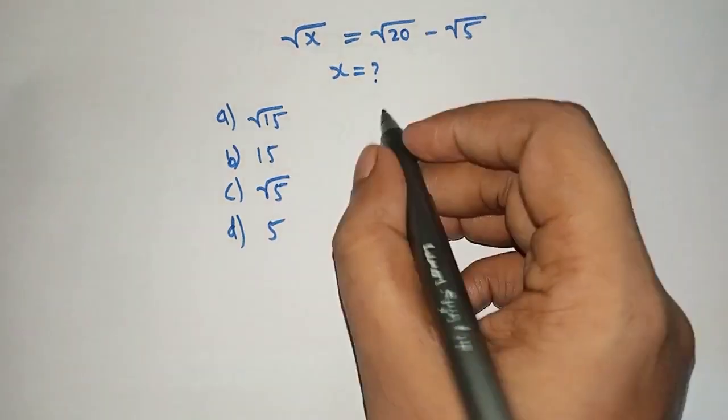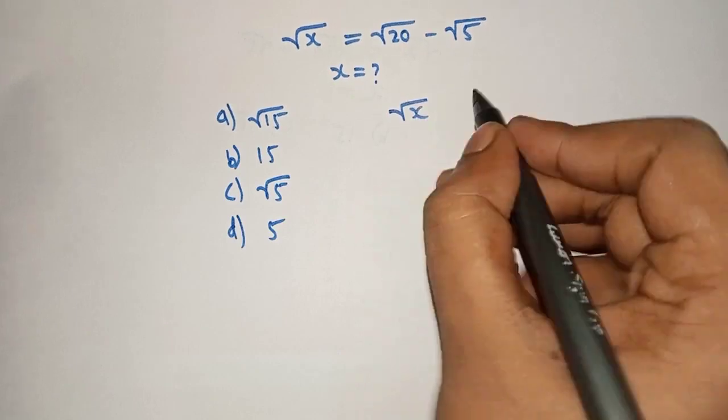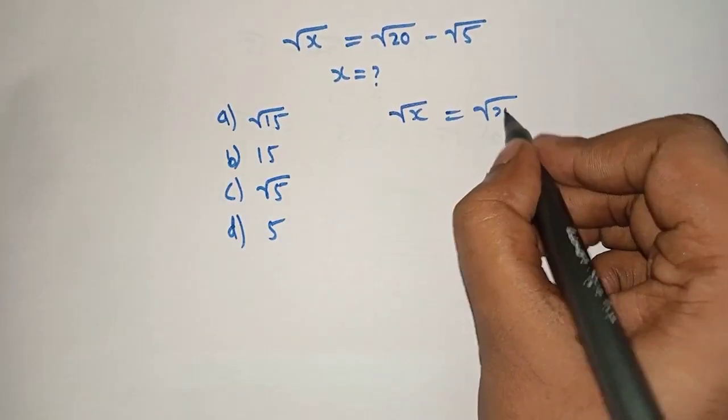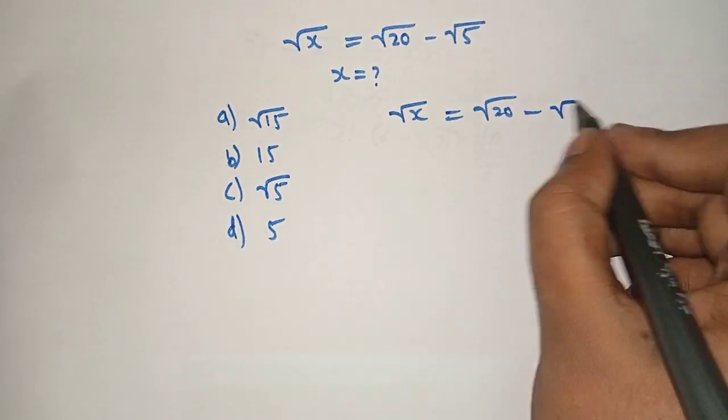So, let's solve. Square root of x equals square root of 20 minus square root of 5.